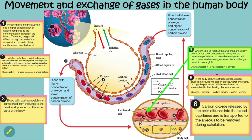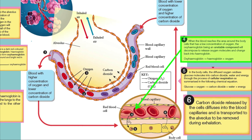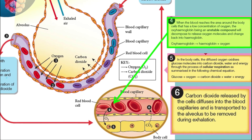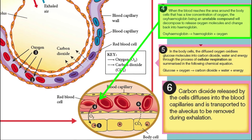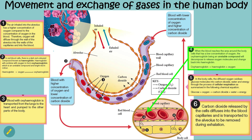When the blood reaches the area around the body cells, which has a low concentration of oxygen, the oxyhemoglobin — being an unstable compound — will decompose to release oxygen molecules and change back into hemoglobin. Oxyhemoglobin in the red blood cells releases oxygen, which then diffuses into the body cells.